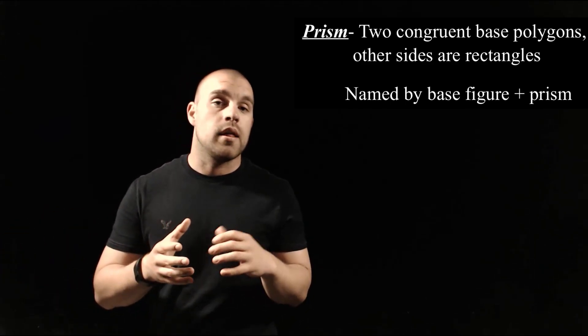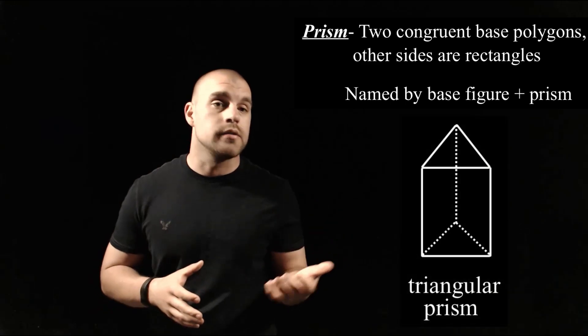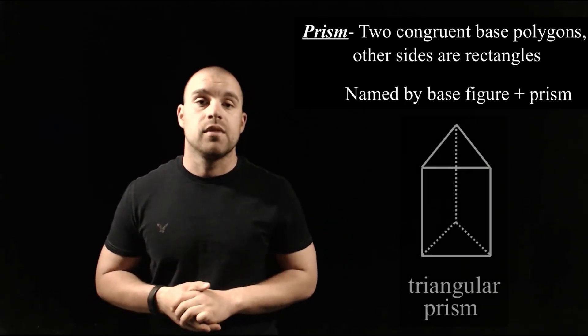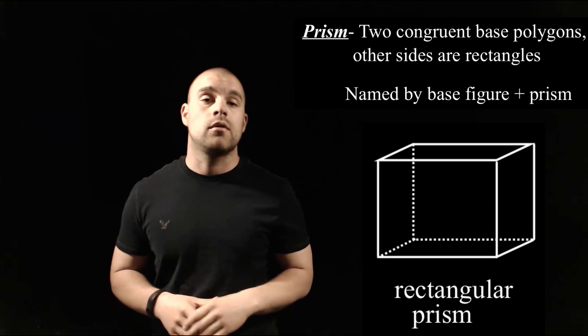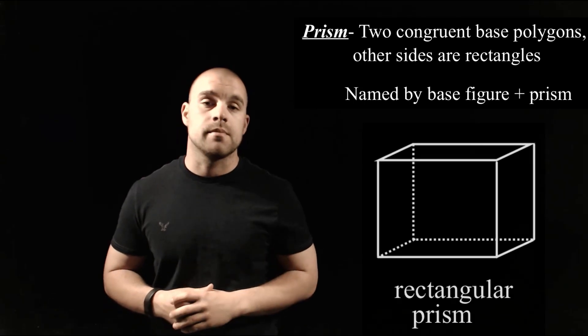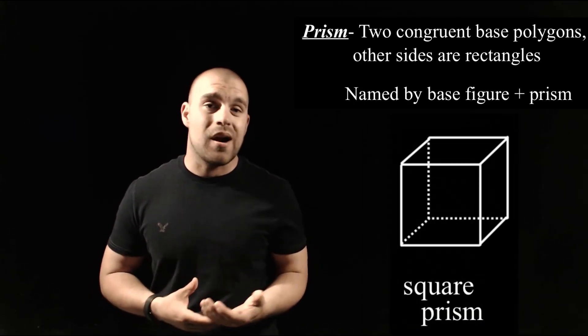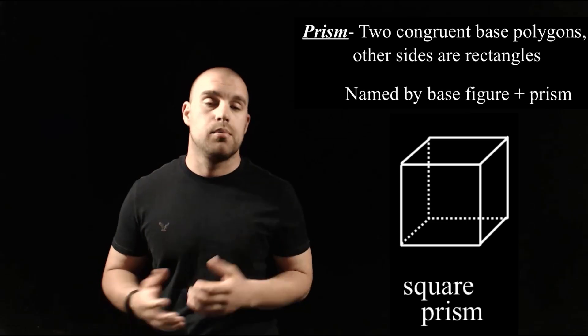So if we're dealing with base figures of triangles, then we would call it a triangular prism. If our bases are rectangles, then we would call it a rectangular prism. Or if our bases are a square, then we could call that a square prism.